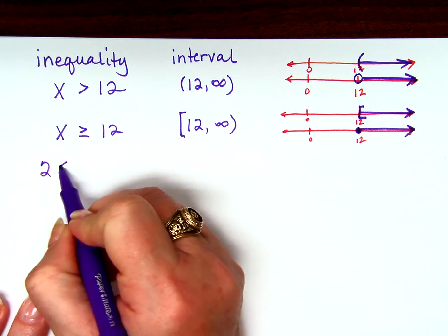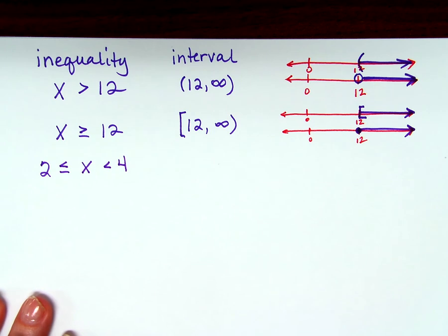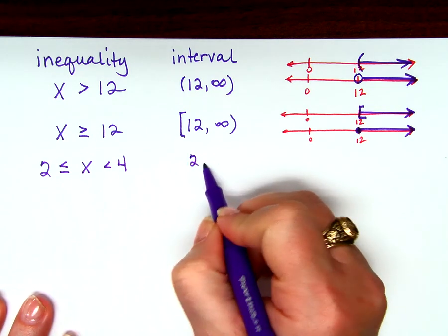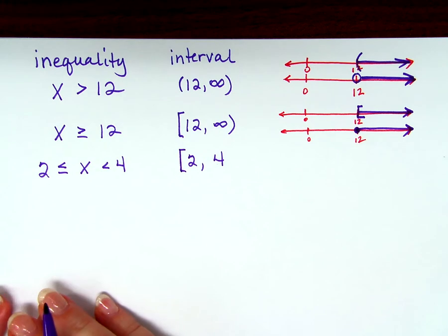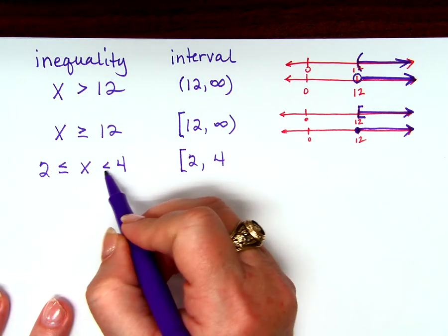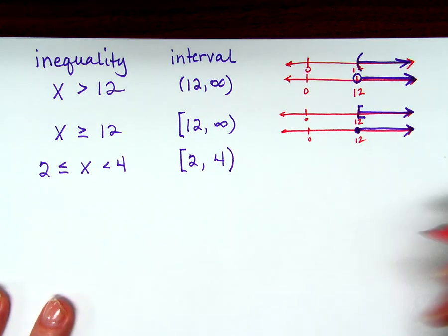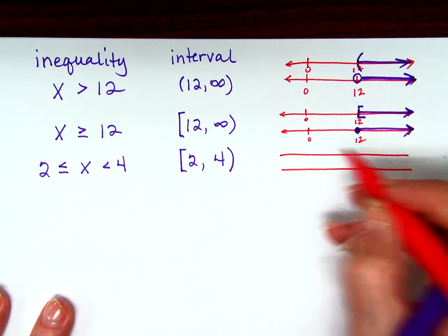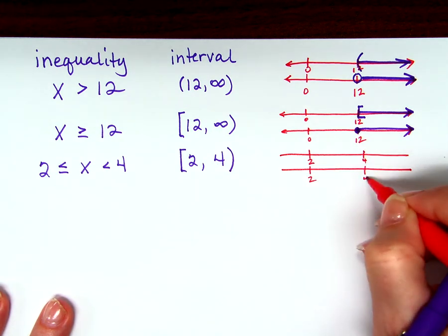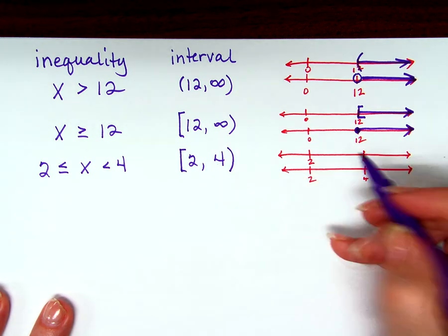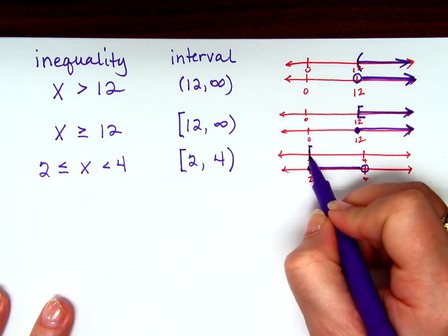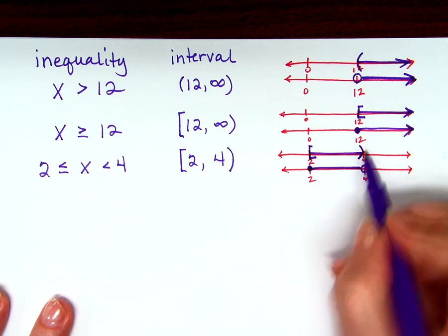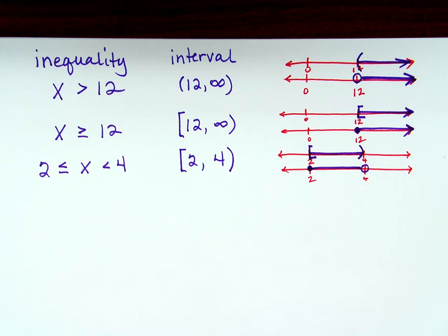So what if it said this: 2 is less than or equal to x is less than 4? It starts at 2 and goes to 4. Is 2 included as part of our domain? Yes, because it's 'or equal to,' so I have a bracket. Is 4 included as part of our domain? No, because it's just less than. So we can either say a closed circle on the 2 to an open circle on 4, or we can say bracket on 2 and parenthesis on 4.